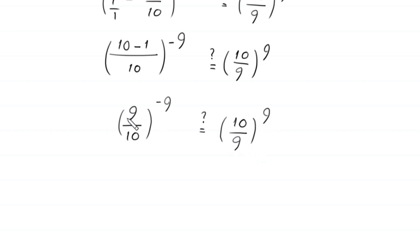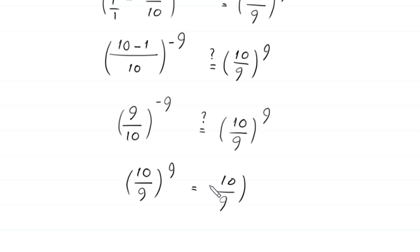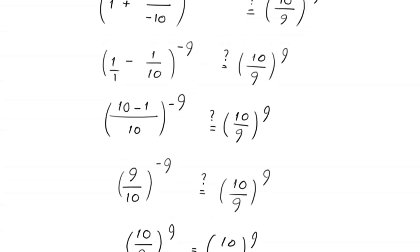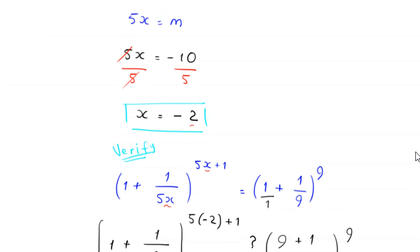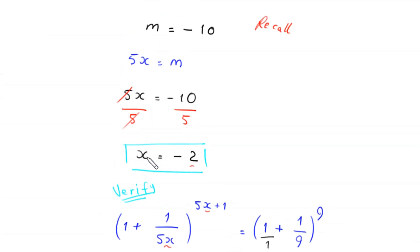Now, 9 over 10, whole to the power negative 9 can be written as 10 over 9, whole to the power 9. So 10 over 9, whole to the power 9, equals 10 over 9, whole to the power 9. The left hand side is equal to the right hand side, which means that the value x equals negative 2 is a valid solution.